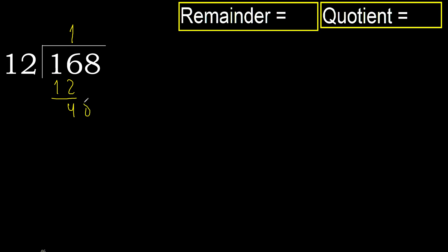Next: bring down 48. 12 multiplied by 4 is 48 — 48 is not greater. Subtract: 48 minus 48 is 0.